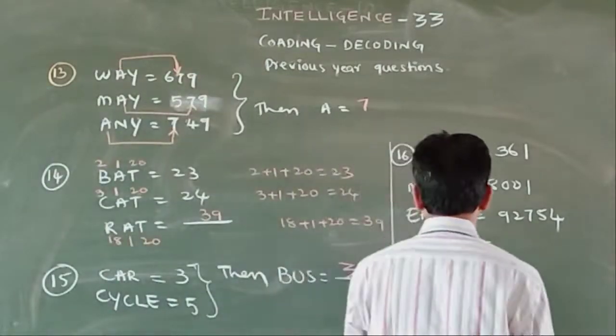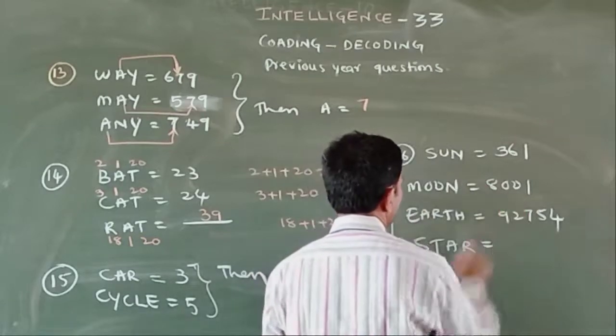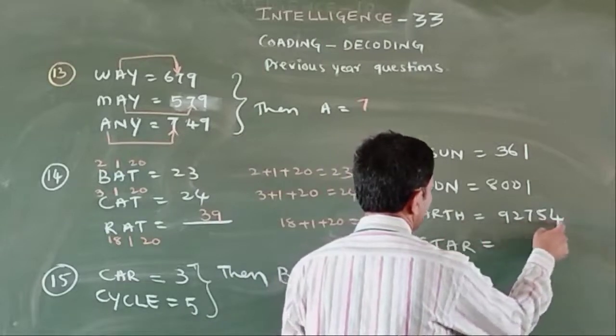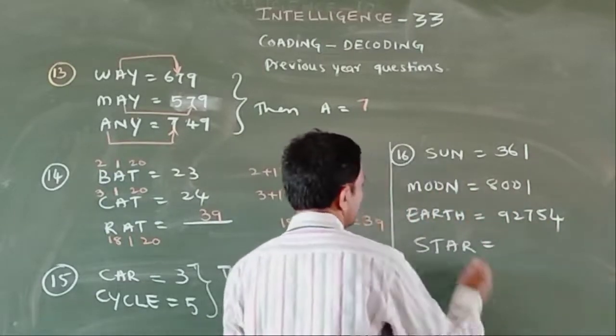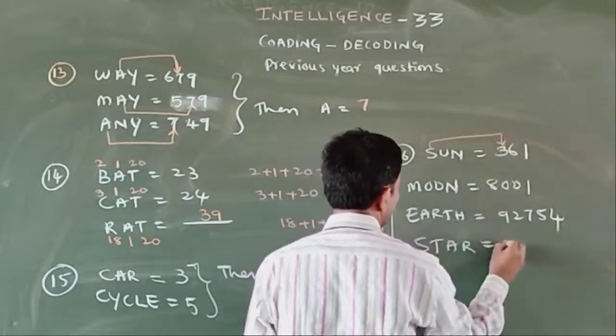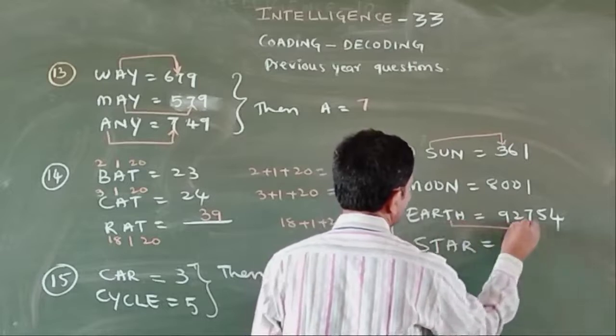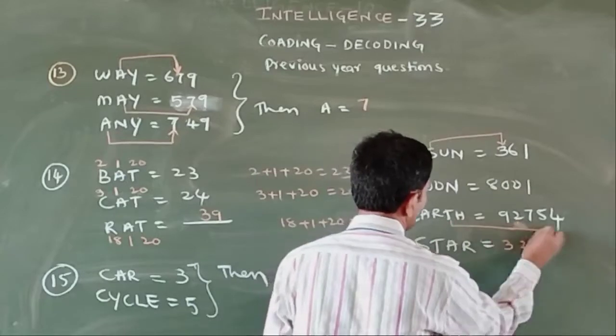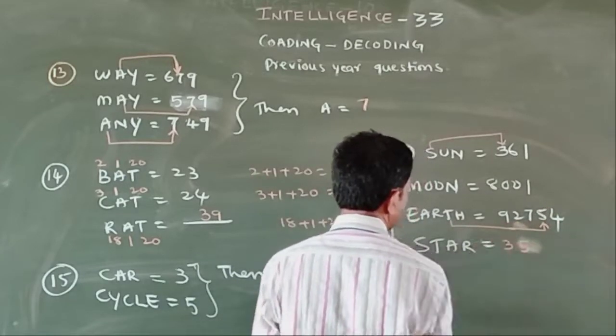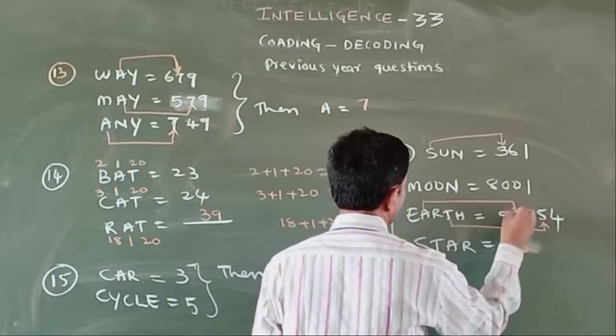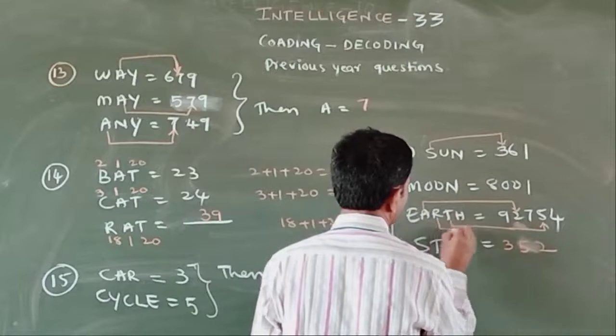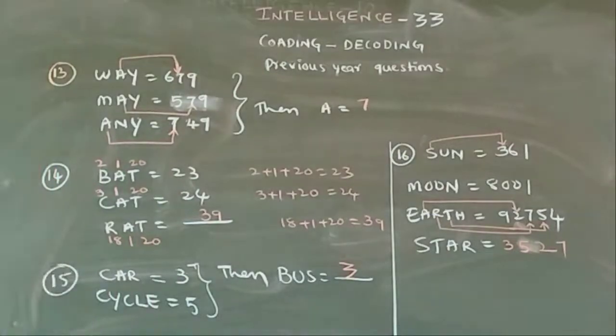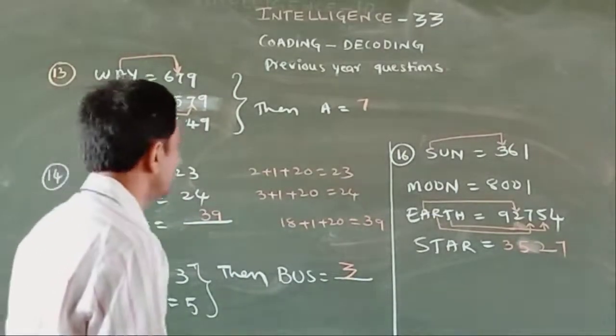SUN equals 361, MOON equals 8001, EARTH equals 92754, then STAR equals what? S is 3, T is 2, A is 2, R is 7. So answer is 3, 5, 2, 7.